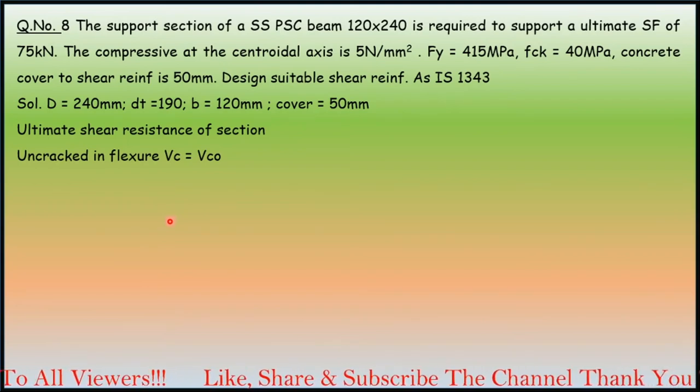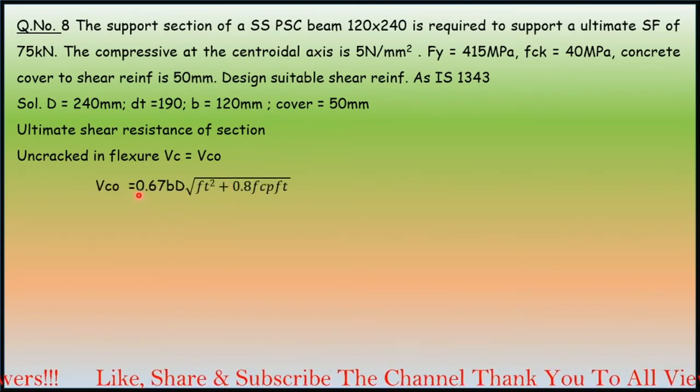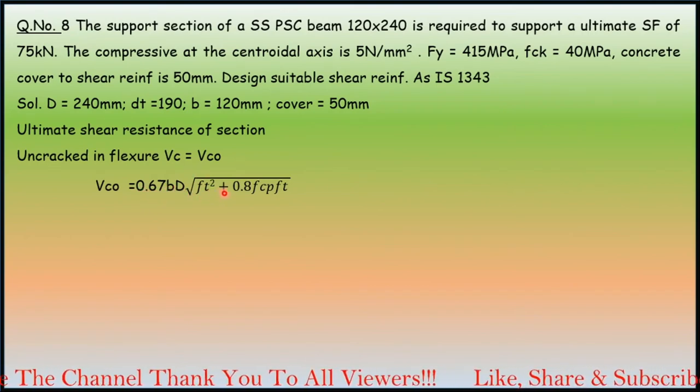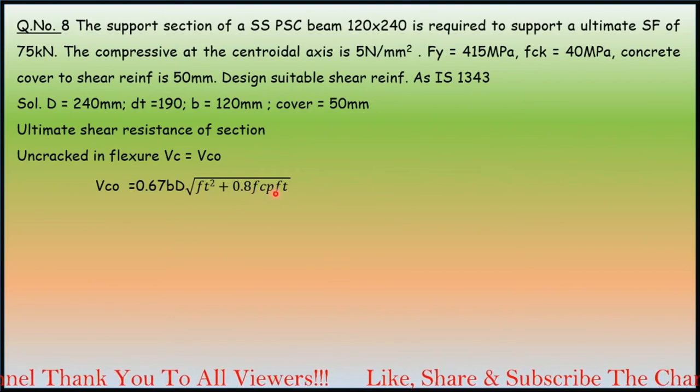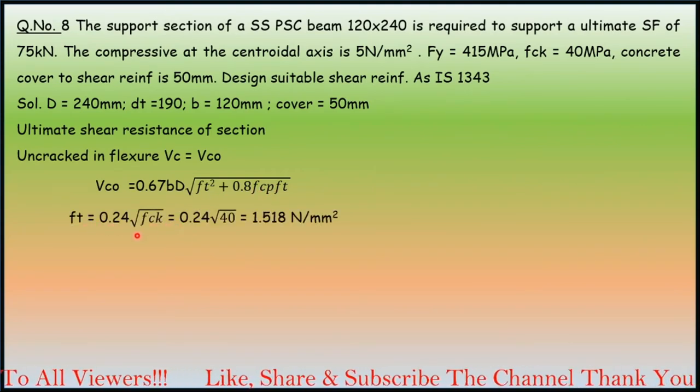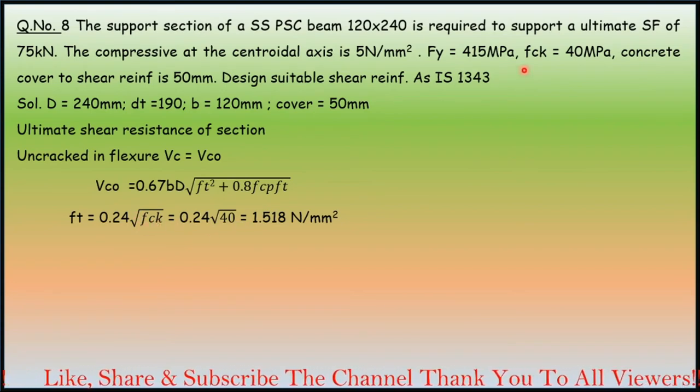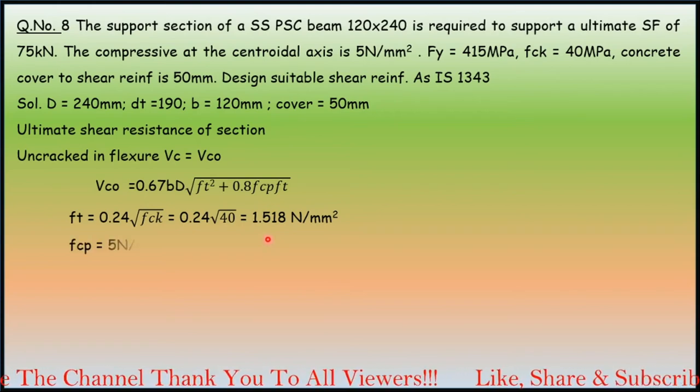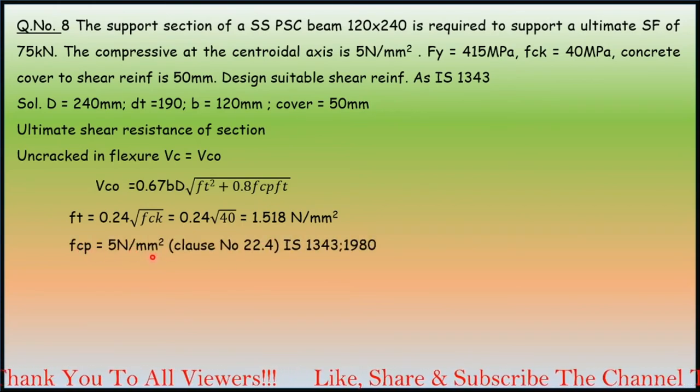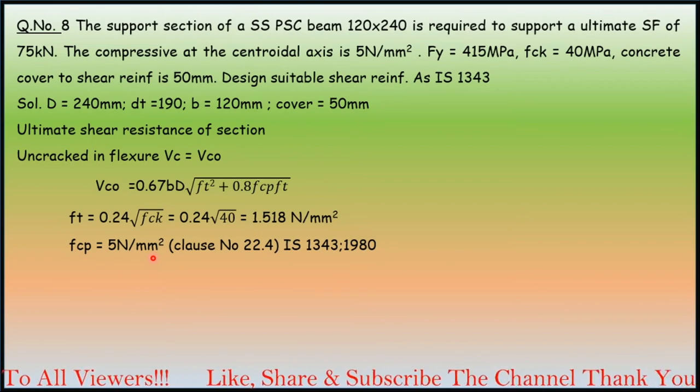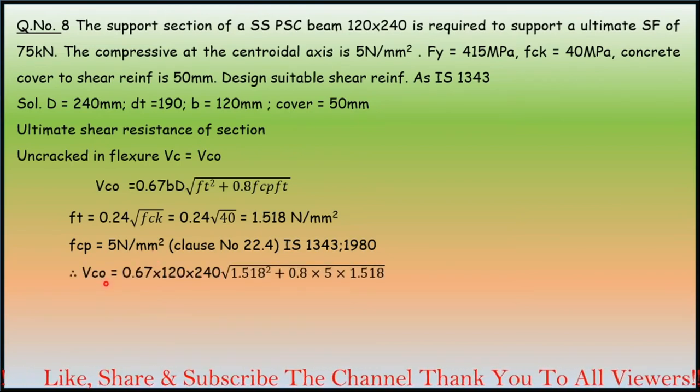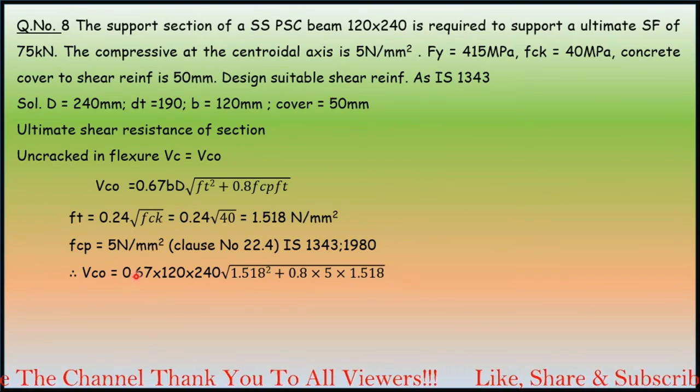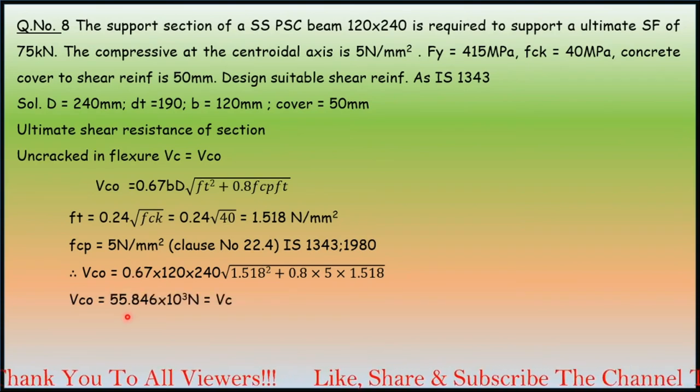Ultimate shear resistance of the section uncracked in flexure: Vc equals Vco as per the code book solution. We have the formula 0.67 BD√(ft² + 0.8 fcp ft). ft is 0.24√fck. The fck value is 40 N/mm², we get it as 1.518 N/mm². fcp is 5 N/mm², clause number 22.4, IS 1343. Therefore Vco uncracked in flexure, when we substitute the values into this formula and find out the value of Vco, it is around 55.846 × 10³ N.